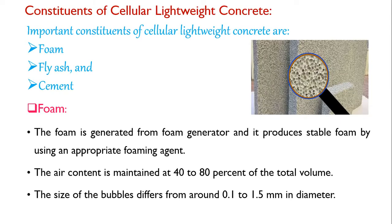Now we will discuss the constituents of cellular lightweight concrete blocks — that is, the ingredients or materials required for manufacturing CLC. The important constituents are: number one, foam; then fly ash; and lastly, cement.